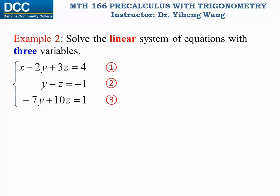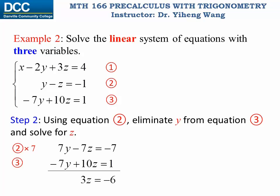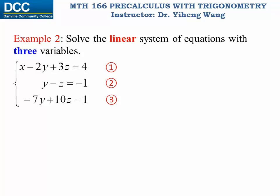Now I'm going to use the elimination method again, but this time I'm going to use equation two to eliminate y from equation three and then solve for z. Equation two is multiplied by seven to get seven y minus seven z equals negative seven, and equation three stays the same. If I add these two equations together I can cancel out y and I'm left with three z equals negative six, and from here I can solve for z, which is negative two. This is my new equation three.